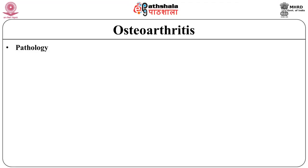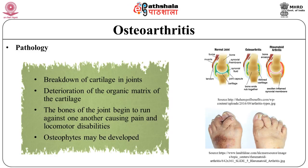Osteoarthritis is described by the breakdown of cartilage in joints, followed by stiffness and pain. Due to deterioration of the organic matrix of the cartilage, the bones of the joint begin to rub against one another, causing pain and locomotor disabilities. Later, osteophytes may develop, causing additional pain and weakening of the surrounding tissues.